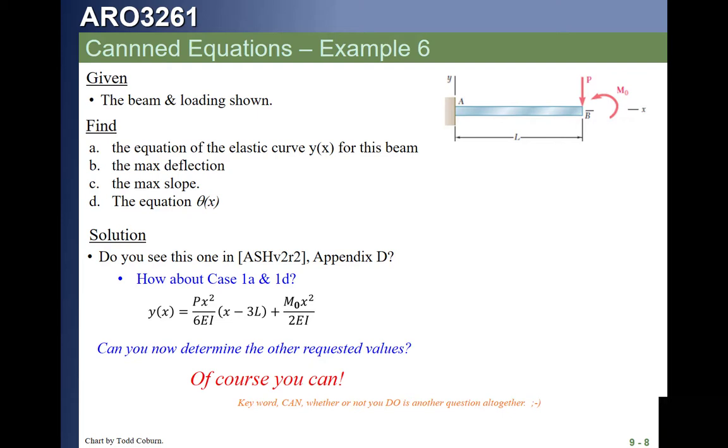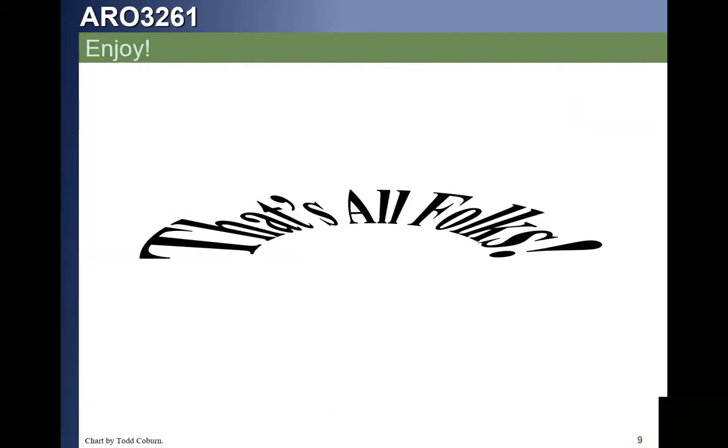If we say to use singularity functions, we will write the equation for the loading function and then integrate and then apply our boundary conditions. If I say use canned equations, we will go and utilize the equations in the back of the book. If no direction is given on what method to use, what you should do is have the engineering judgment to know what is the easiest method that you can apply to maximize the chance of you getting a correct solution that you understand. Usually, if the beam is listed in whole or in part by one of the equations, the canned equations in the back of the handbook, that's going to be your best bet for nailing the solution. That's all we have on canned equations. Go out there and practice until you understand it.